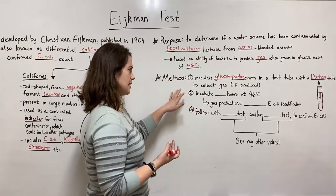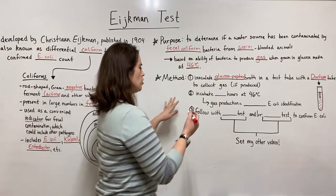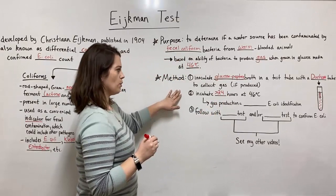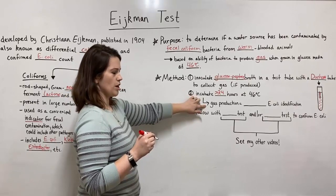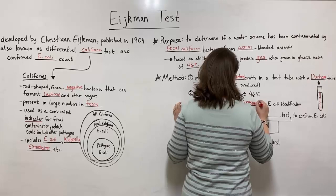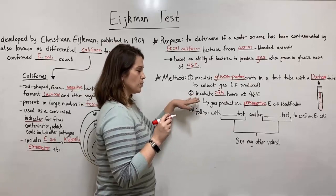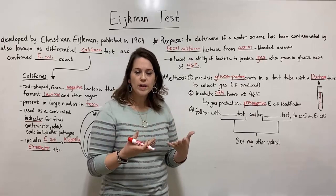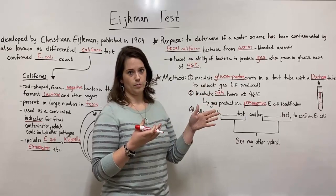First you inoculate the broth in a test tube that contains a Durham tube. Then you incubate it for over 24 hours at 46 degrees. If you have gas production, that would be a positive result, and that is considered a presumptive identification. Presumptive identification of E. coli means that we are presuming there is E. coli based on the presence of gas in the Durham tube.